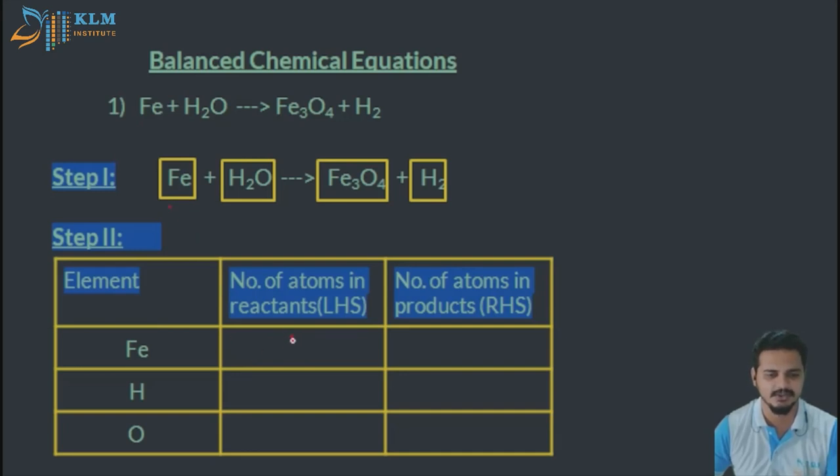In the right-hand side there are three Fe, and hydrogen is two here, two again. Oxygen molecules is only one here and there are four number of oxygen atoms here. Okay, so let's see how do you balance such an equation.